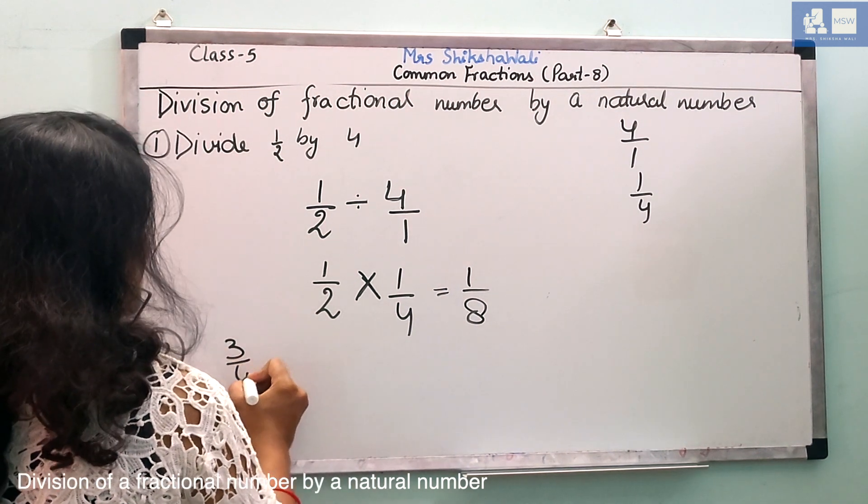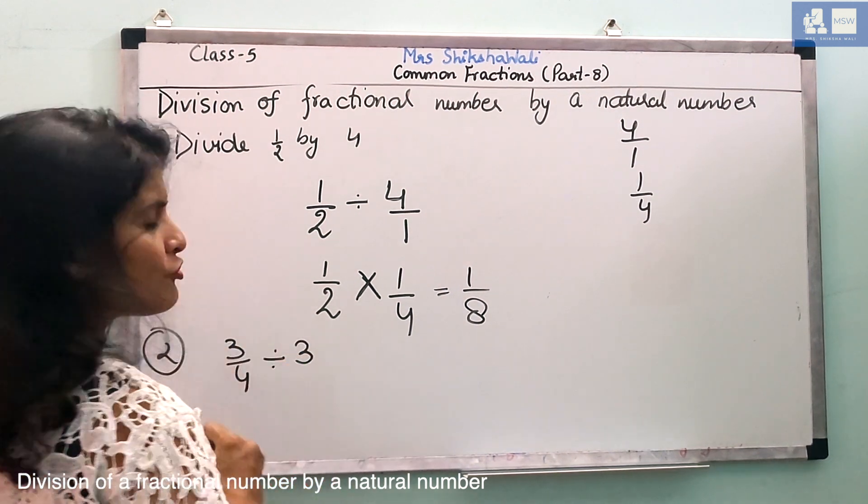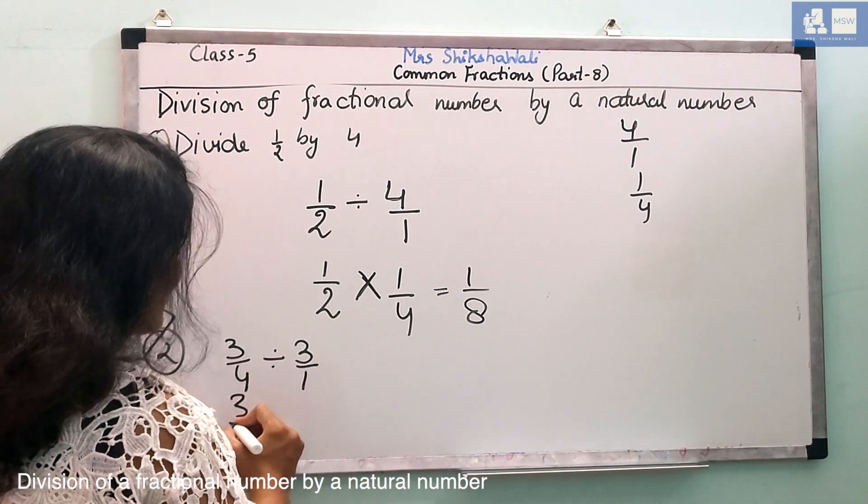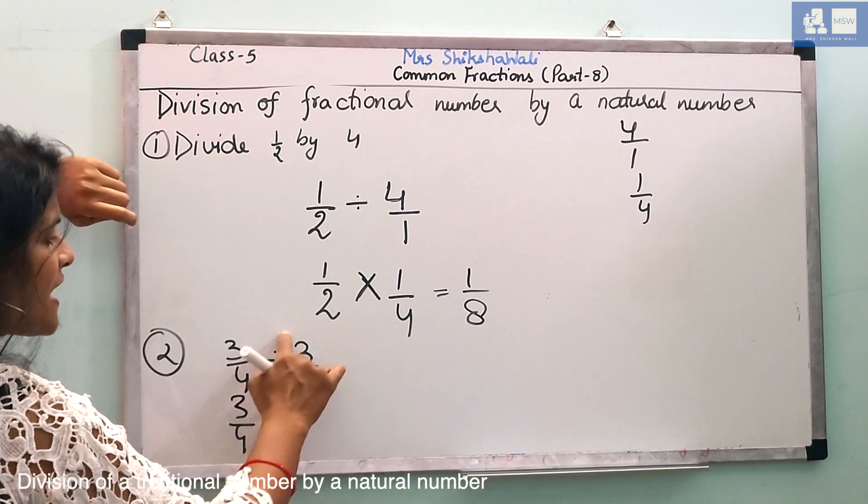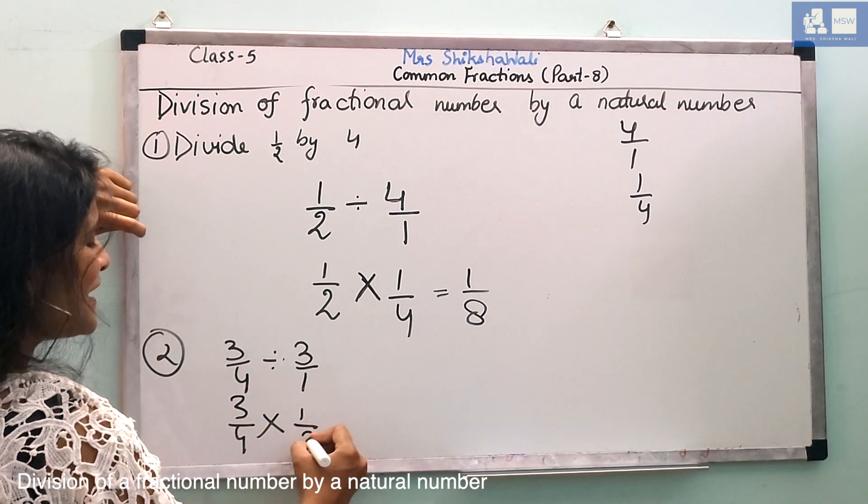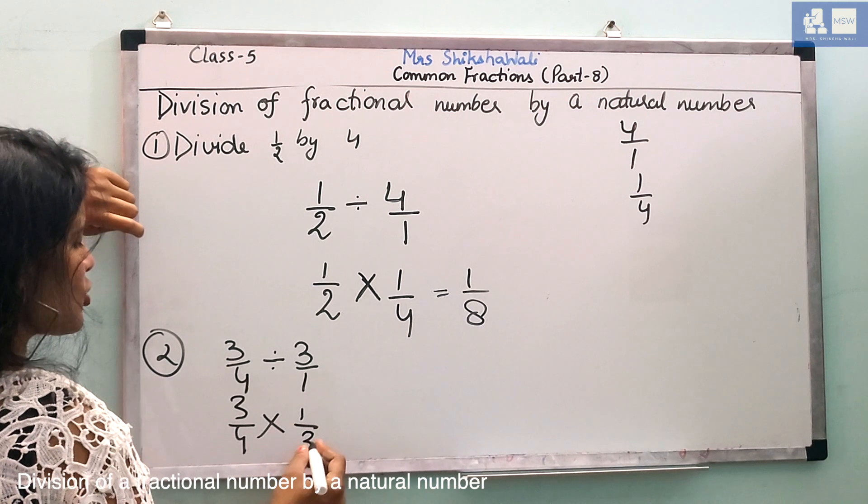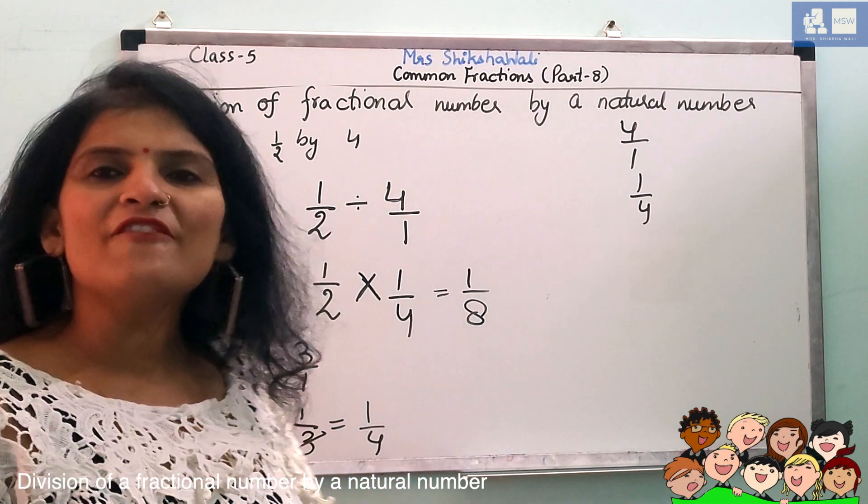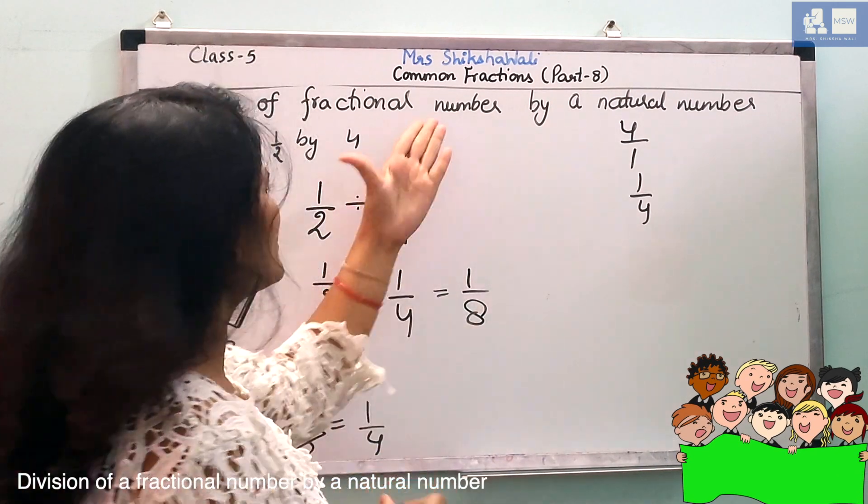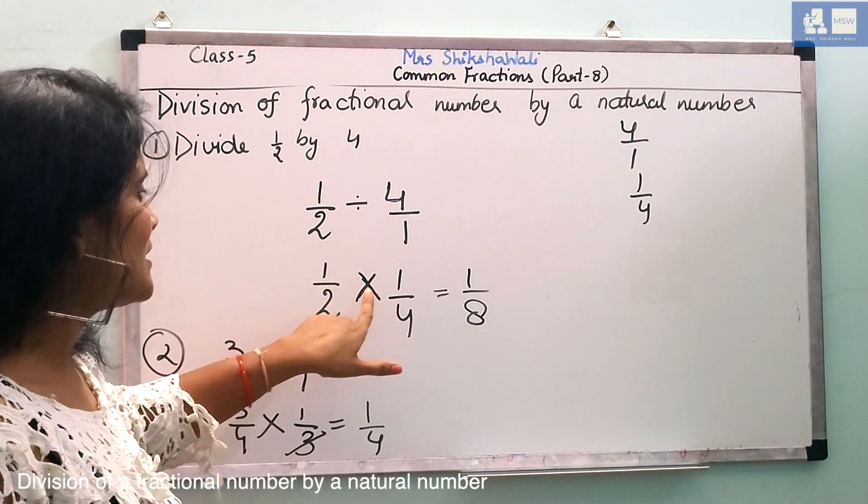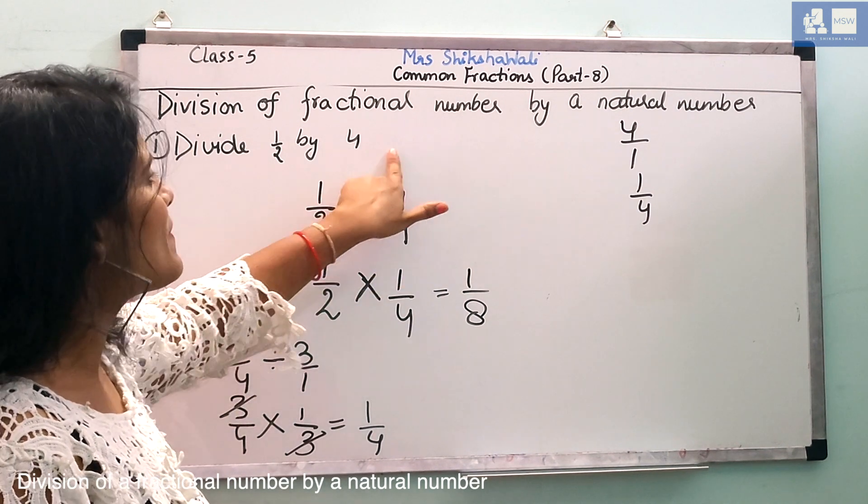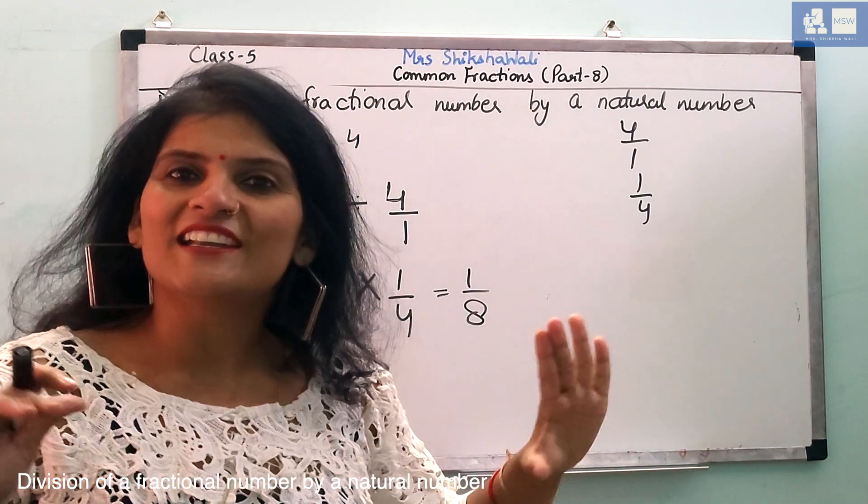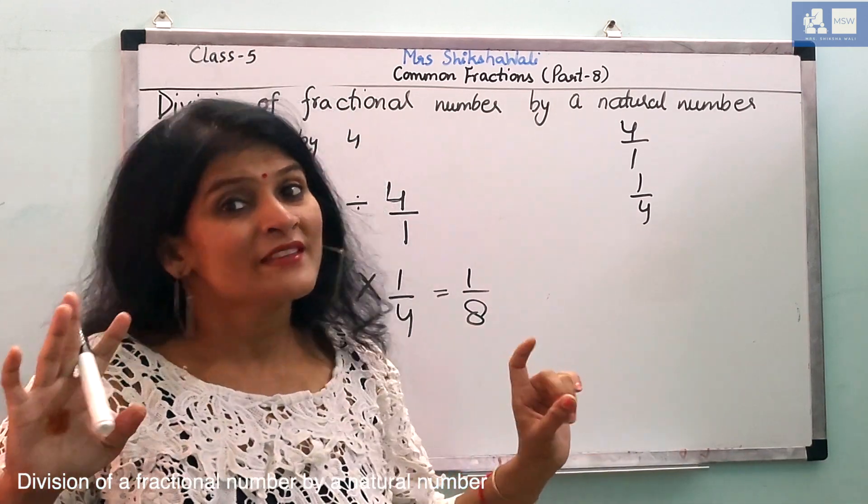Similarly, if you say 3 by 4 divided by 3, what will happen? This is what happened. Now, as we have done 3 by 4, this sign has done multiplication. Multiplicative inverse, 3 by 3 is the answer. 1 by 4. I think it's very easy. Just to make the division sign multiplicative inverse, and this is our fractional number. It will be reciprocal.